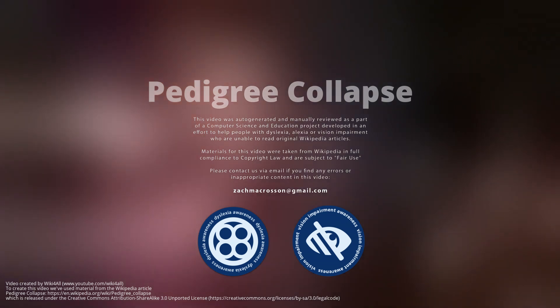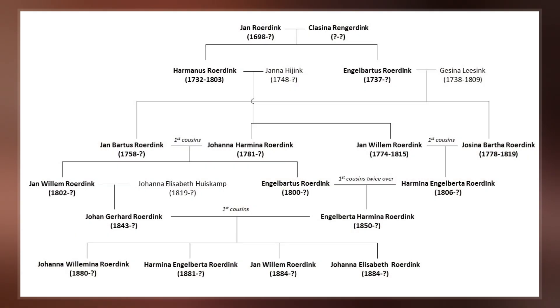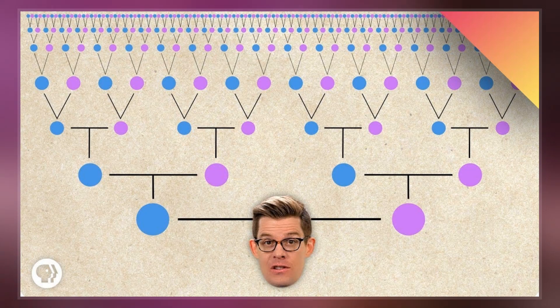In genealogy, pedigree collapse describes how reproduction between two individuals who share an ancestor causes the number of distinct ancestors in the family tree of their offspring to be smaller than it could otherwise be. Robert C. Gunderson coined the term; synonyms include Implex in the German and Entwand.